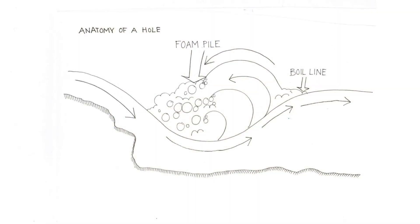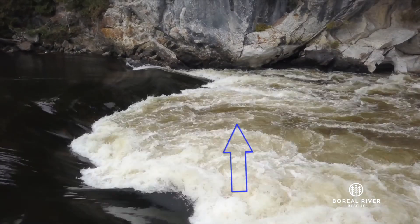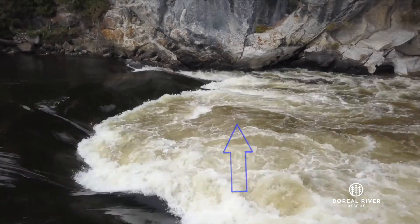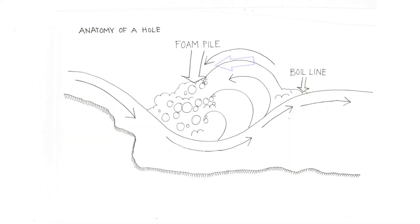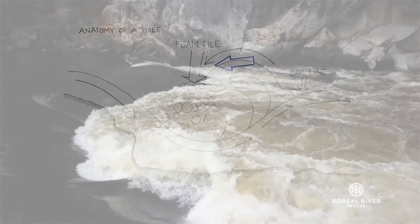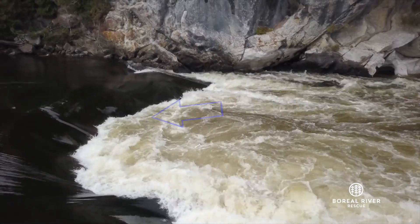Phase two is where it moves downstream along the river bottom — this section can't be seen from above the surface. Phase three is where it rises back up towards the surface, called the boil line because the water looks like it's boiling up to the surface. Phase four is called the backwash or foam pile where the water flows back upstream. The backwash is often white because it's aerated.